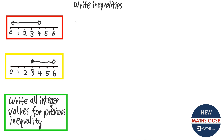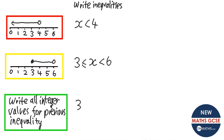For the practice: the first one is x is less than 4 — it's a hollow dot, so not equal to it. The next one has 3, then x, then 6. So x is greater than or equal to 3 but not as big as 6. It can be equal to 3 but not equal to 6. So the integers are 3, 4, and 5 — but not 6.